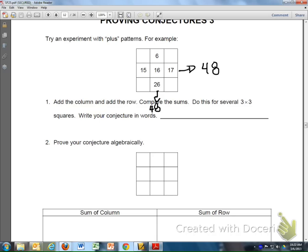So my conjecture is if I add three numbers across, I add three numbers up and down, so horizontally and vertically, I will get 48 no matter what.